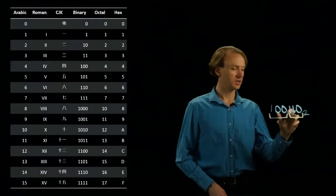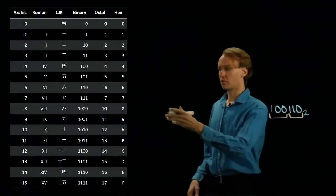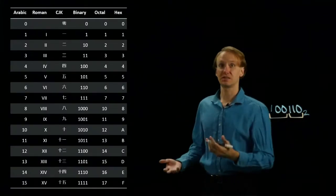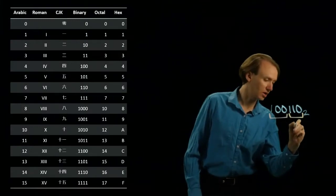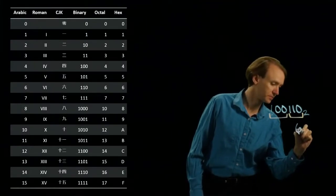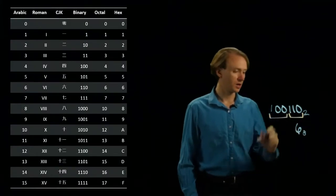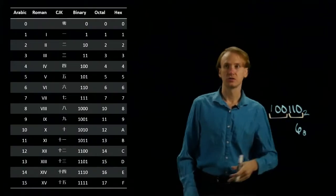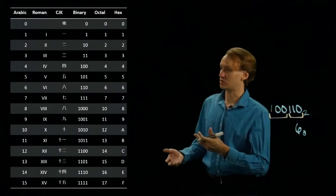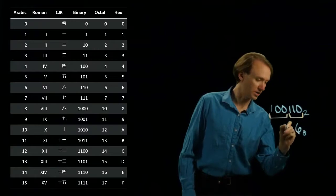So if I take my 110, I look over my table, I see that's 6 in octal, so I'll write down a 6. Then I have 100, so I'll look over my table, and that one's 4, so I'll write down a 4.